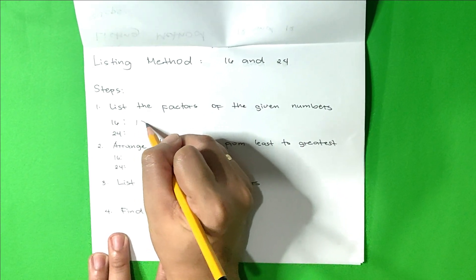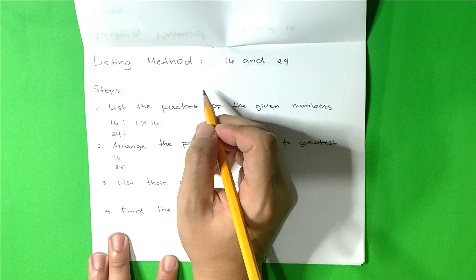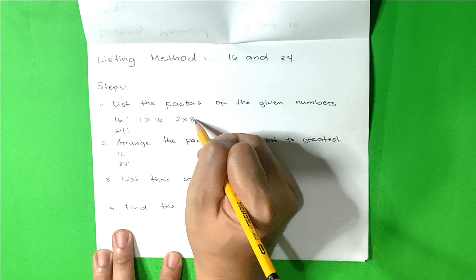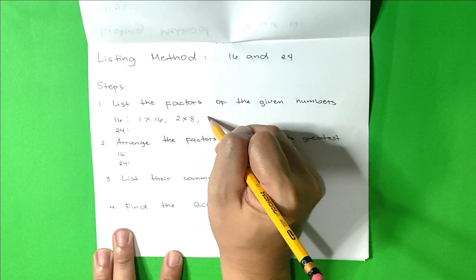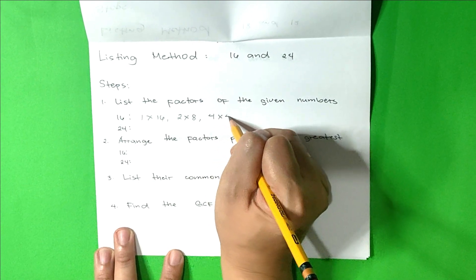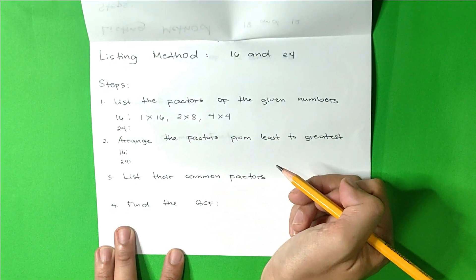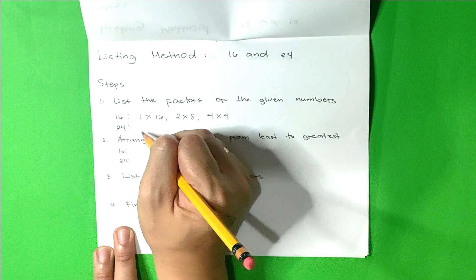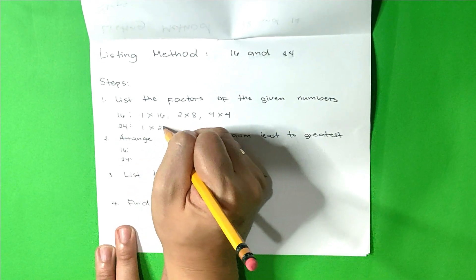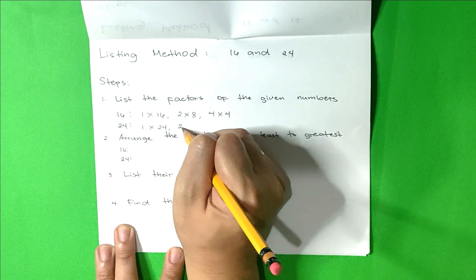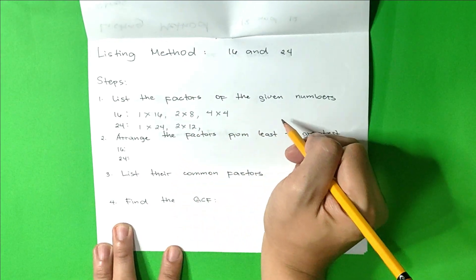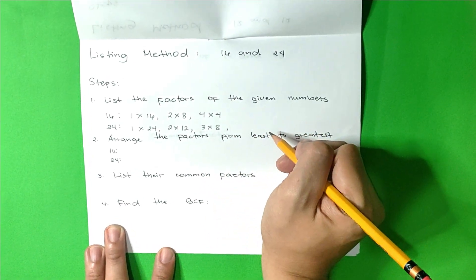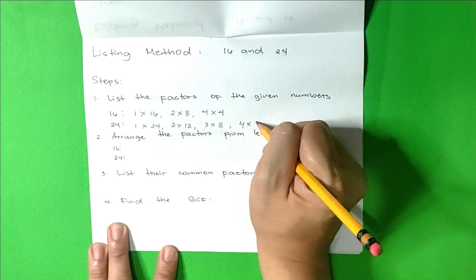1 times 16. What else? Yes, 2 times 8. Correct, 4 times 4. Now let's have number 24. The factors of number 24 are 1 times 24, 2 times 12, 3 times 8, and 4 times 6.